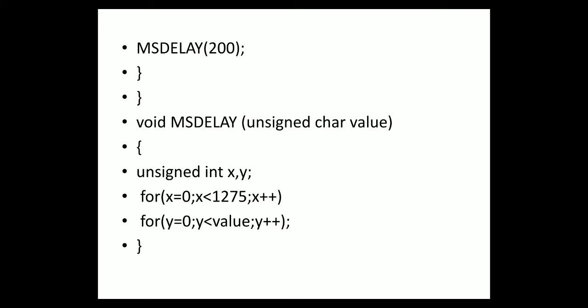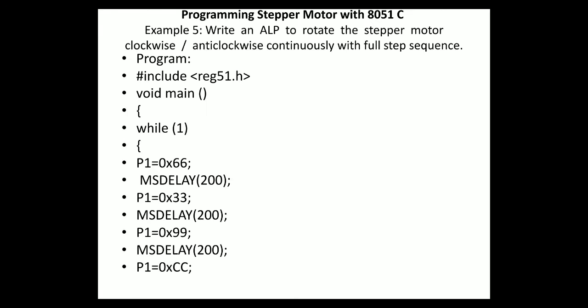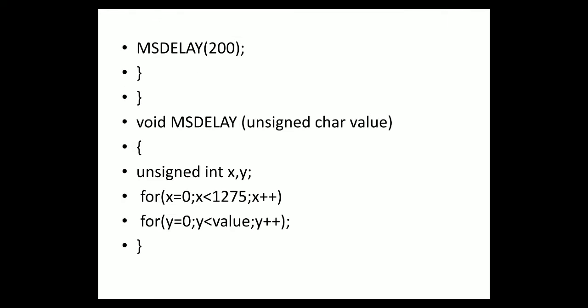Suppose in the same program I ask: I want to do anticlockwise rotation — what change do you want to do? Just reverse the sequence: CC, 99, 33, 66. If you do this, the same program will perform anticlockwise rotation. Now let us do the switch-controlled program in C, similar to what we did previously.